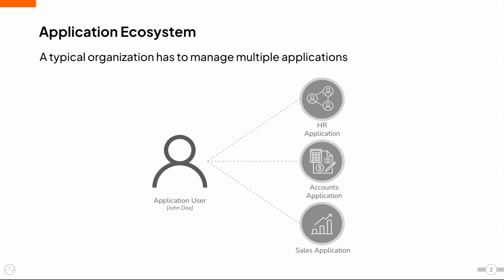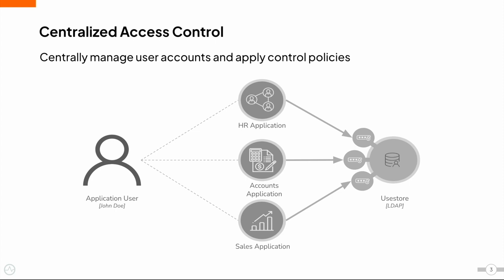When the user tries to login to the next application, that application has to follow the same process again. In order to minimize this hassle, we can use a centralized access control system. All the user credentials and security aspects can be managed by a central user store. For example, if an administrator wants to do a bulk forced password reset for all the active users, that can be easily handled using this setup without having to reset passwords for each individual application.